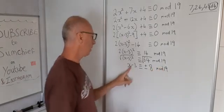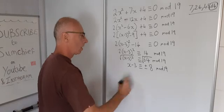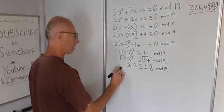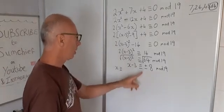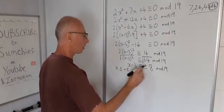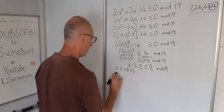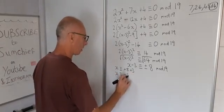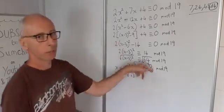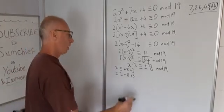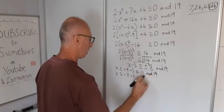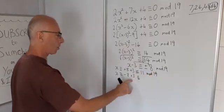Now all we've got to do is get x on its own. Send the 3 over the other side. So now we're going to split this into two to show our two solutions. First one is x ≡ 8 + 3. If the -3 comes the other side we'll end up with +3. And the other one is x ≡ -8 + 3. This is x ≡ 11 mod 19, and this is -8 + 3 which is -5.